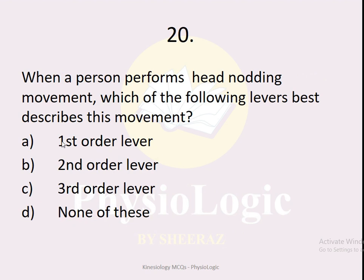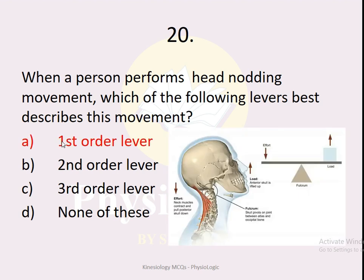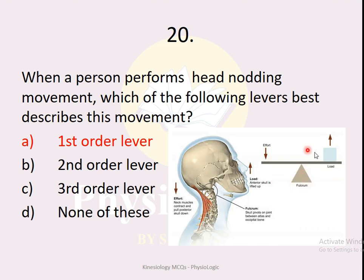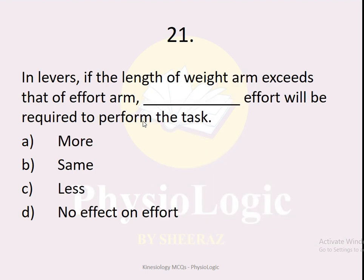MCQ number twenty: when a person performs head nodding movement, which lever best describes this — first-order, second-order, third-order, or none? The correct option is first-order lever. In head nodding, the fulcrum is at the atlanto-occipital joint, the effort is provided by the neck extensors, and the weight is the weight of the head. Since the fulcrum is in the center, this is a first-order lever.